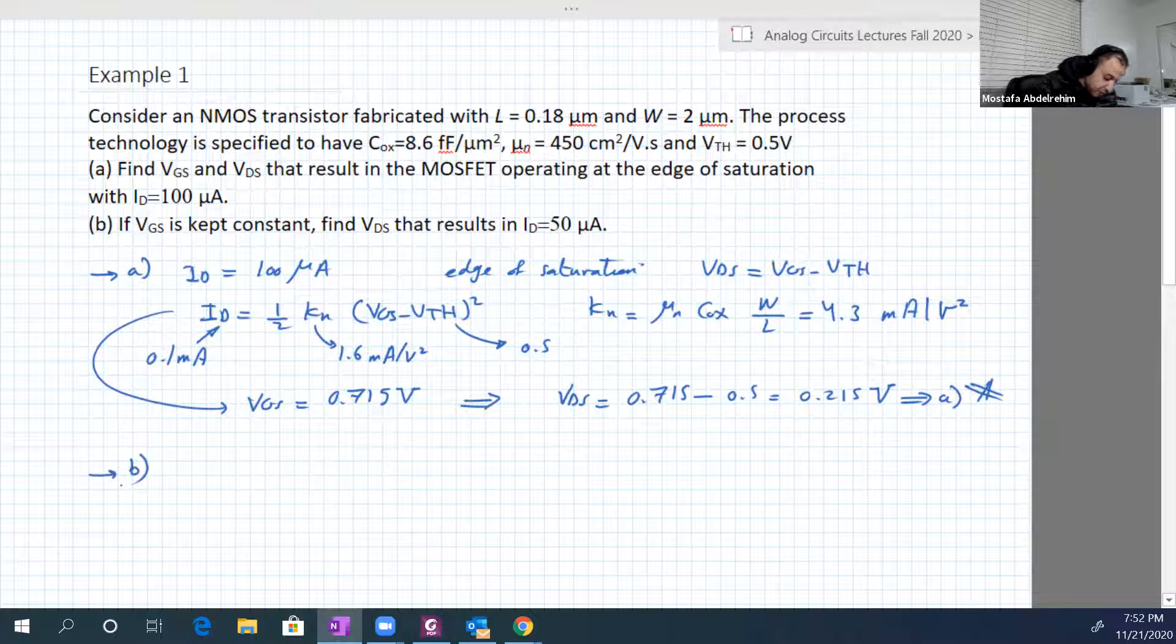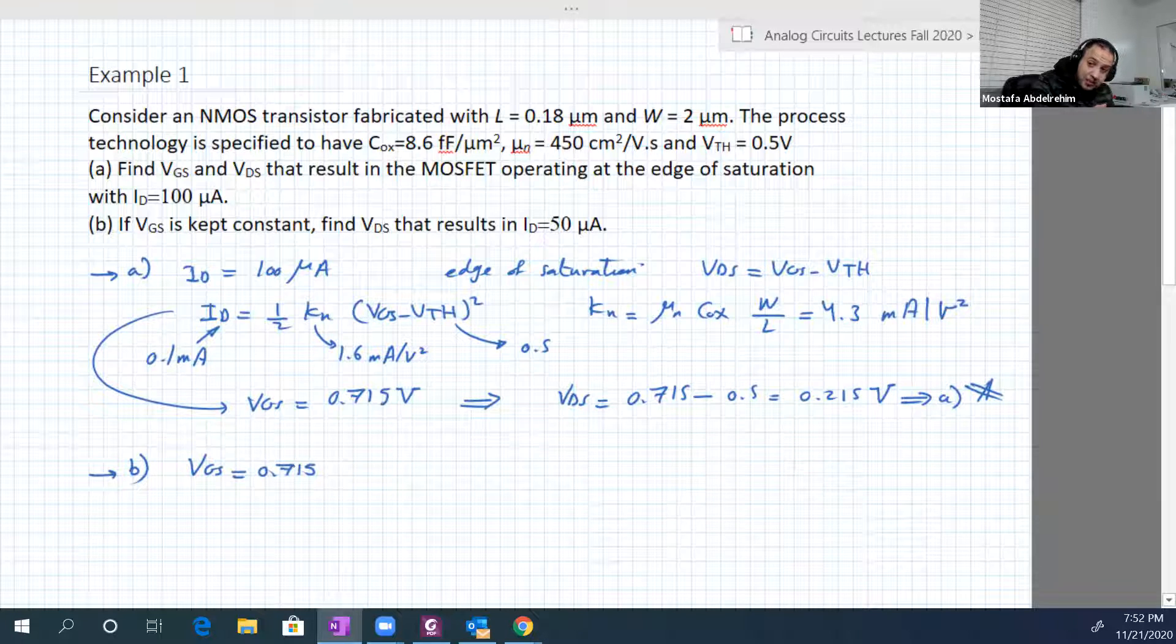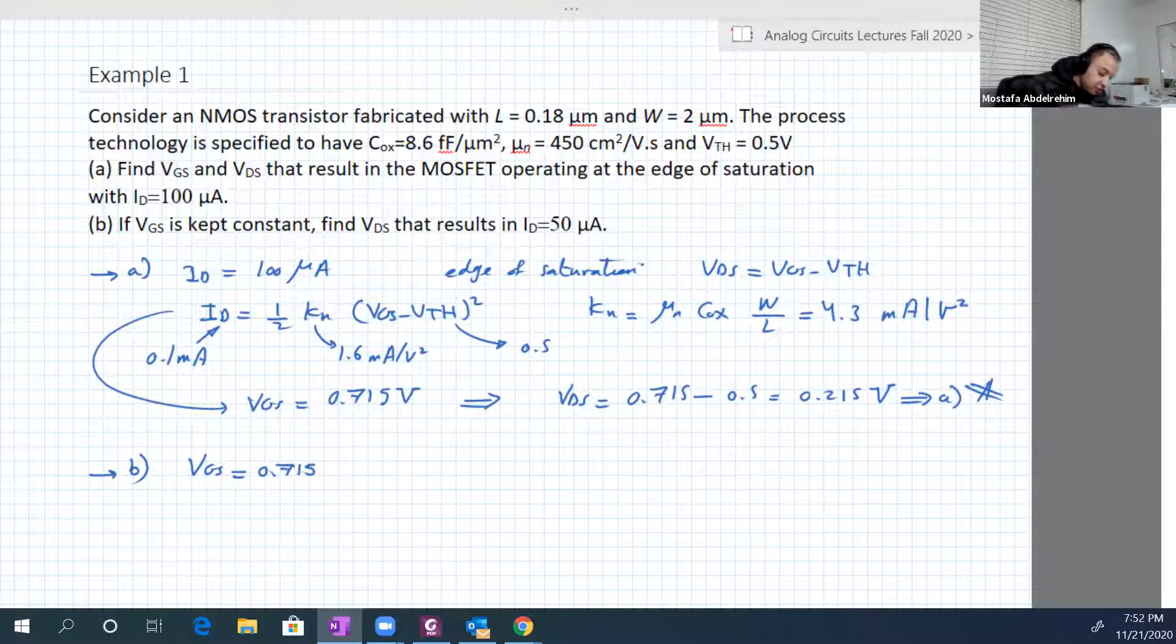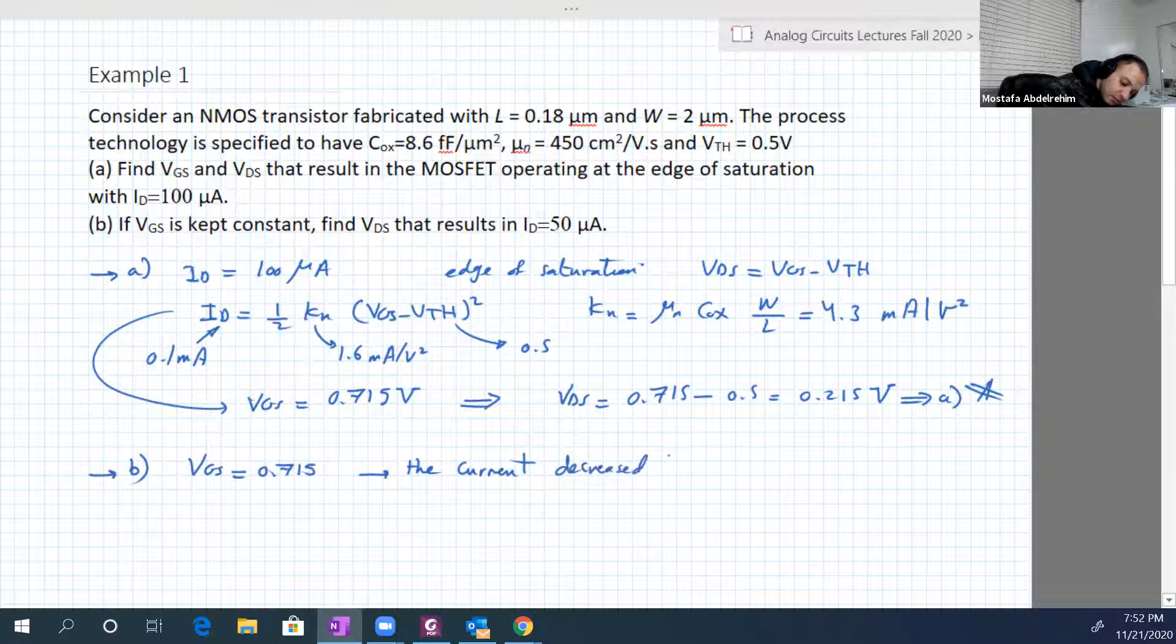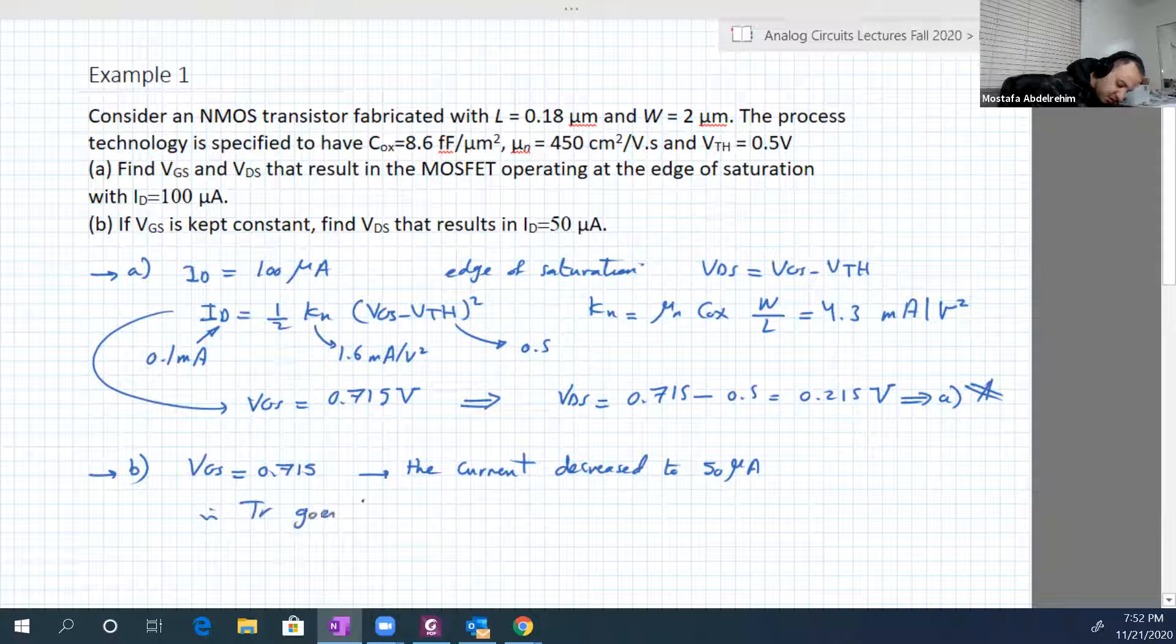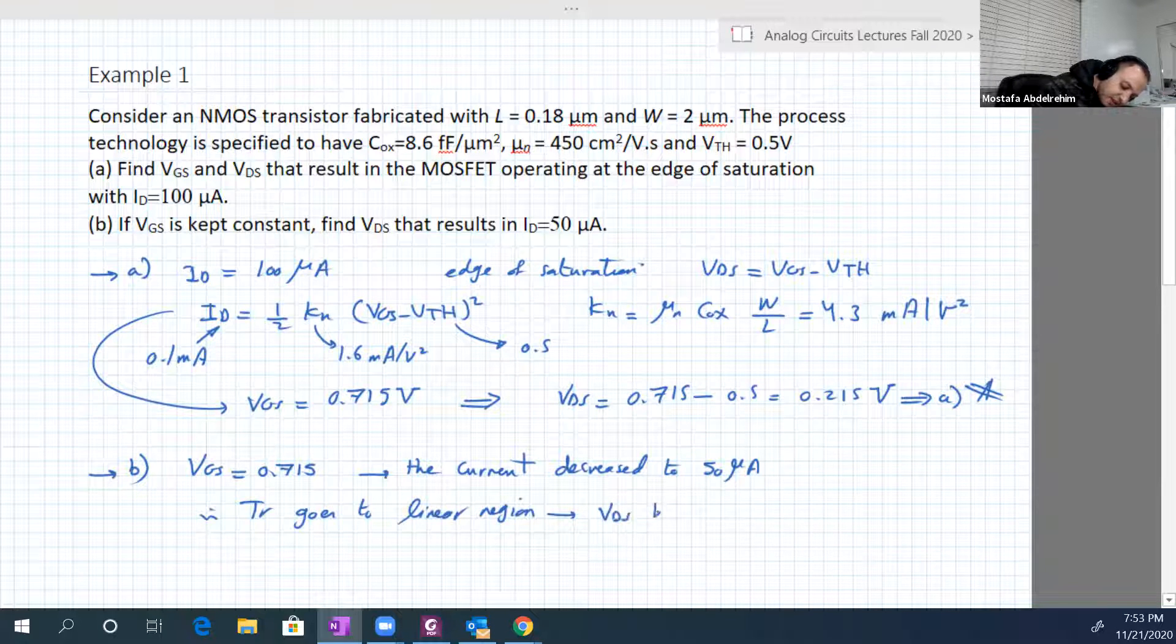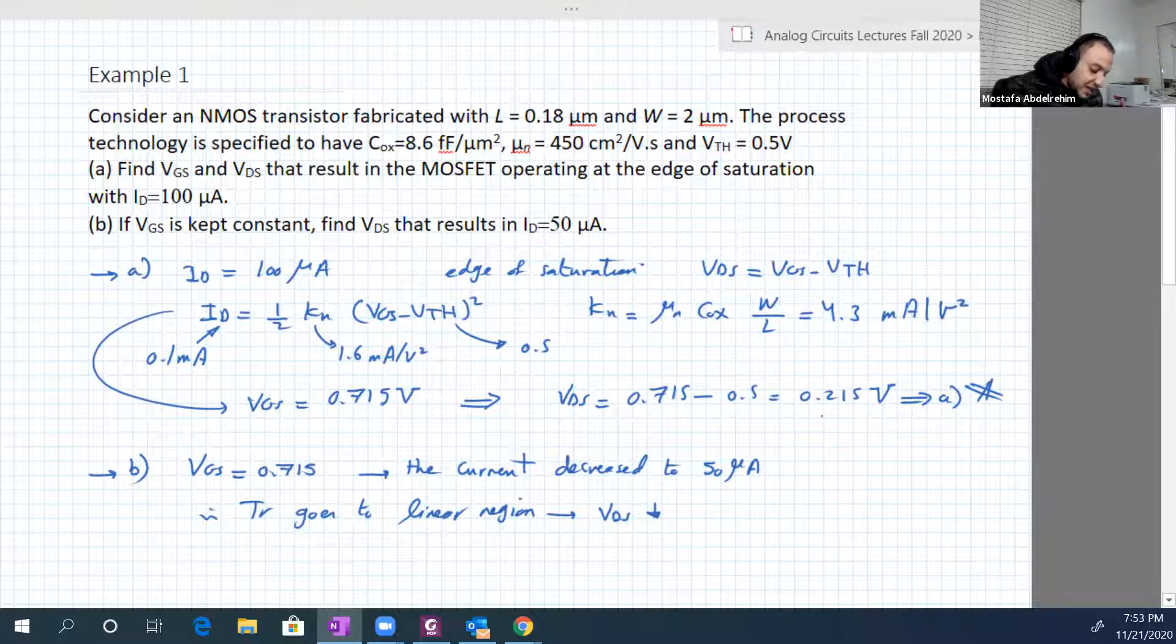Number B. If VGS is kept constant at 0.715, find VDS that results in ID equal to 50 microamperes. So at the edge of saturation, the current was 100 microamperes. Now the current decreased to 50 microamperes. That means we go into the linear region. The transistor goes to the linear region. That means VDS reduced. When we calculate it now, it should be less than 0.215.